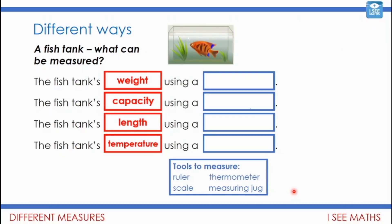Now, let's have a look at this example here, a fish tank. Now, a fish tank, there's lots of different things I could measure about it. So I could measure its weight, its capacity, its length or its temperature. Now, what I want you to do now is pause the video and have a look at these tools to measure. And think for each example, which tool would be used to take that measurement. Pause the video and have a go.